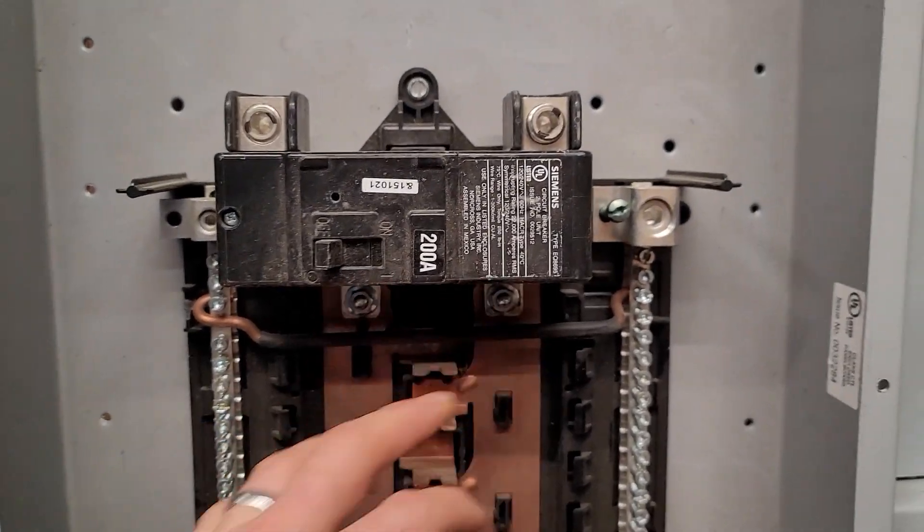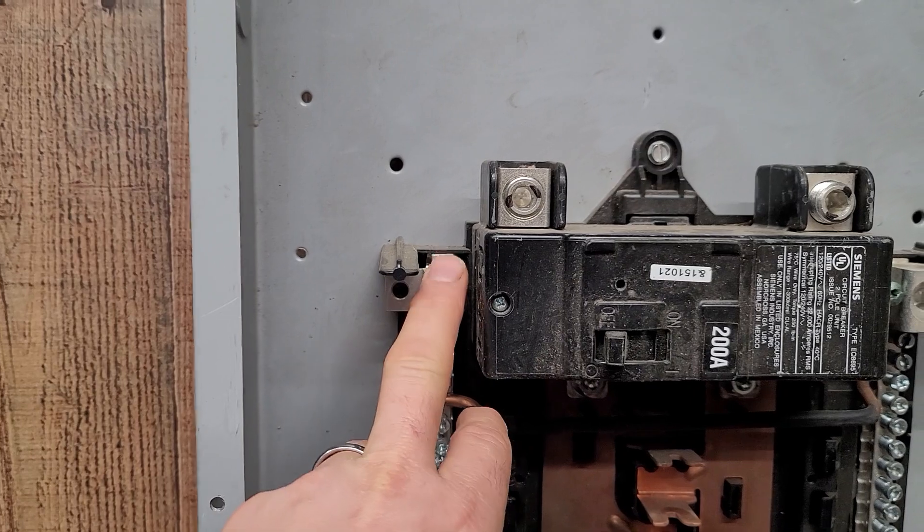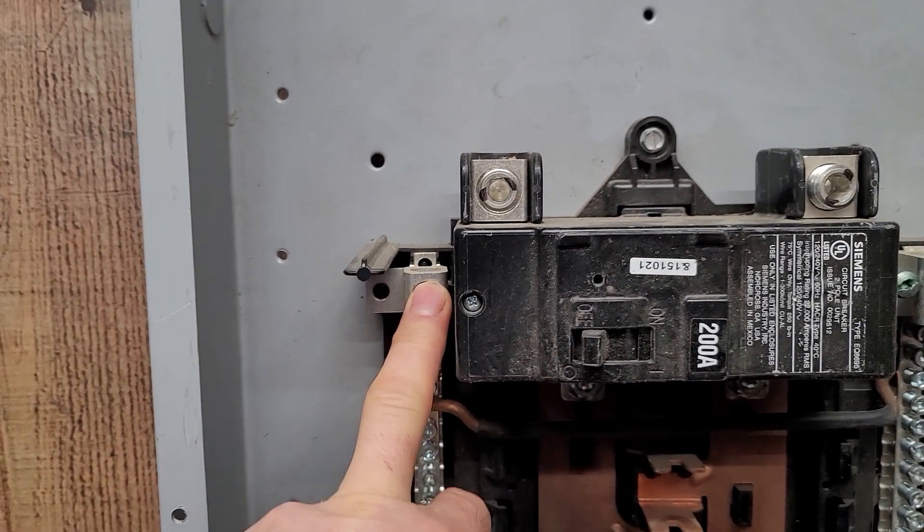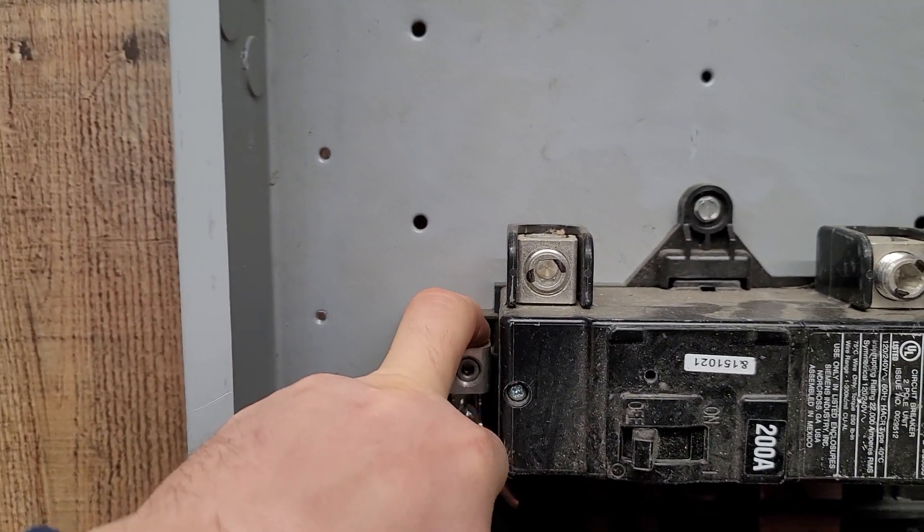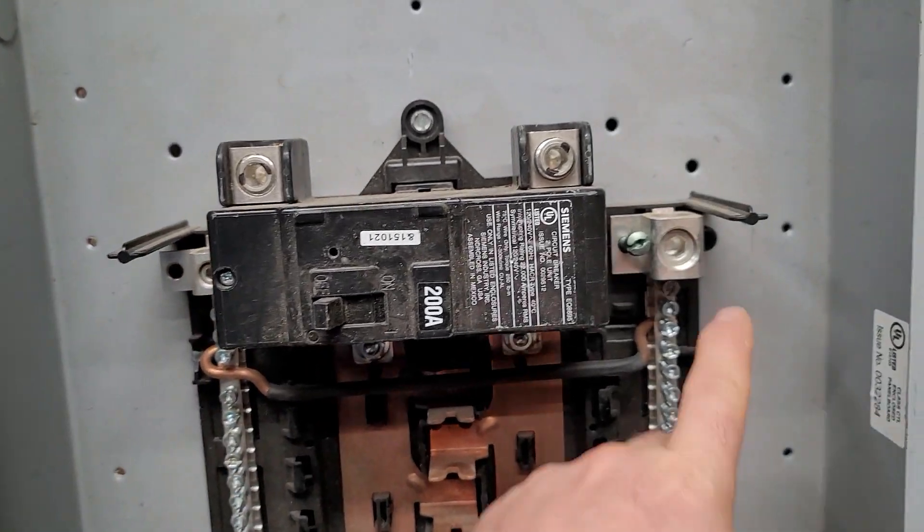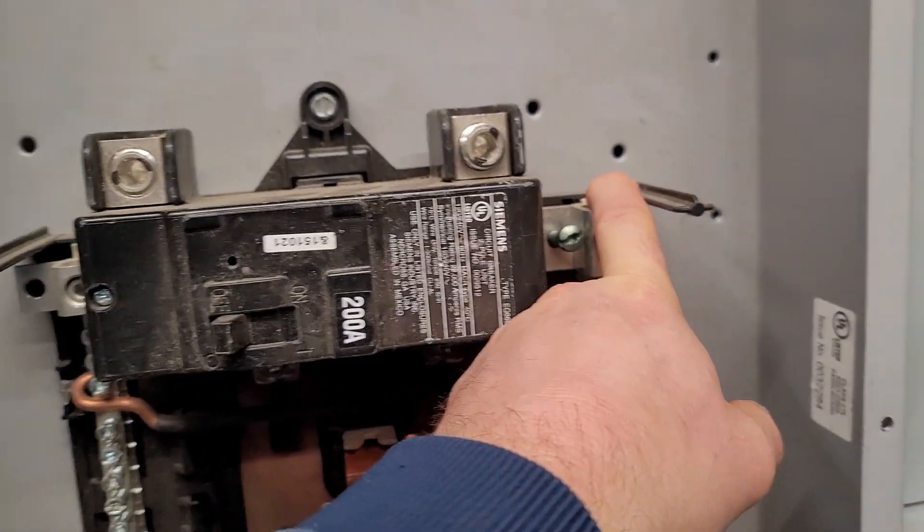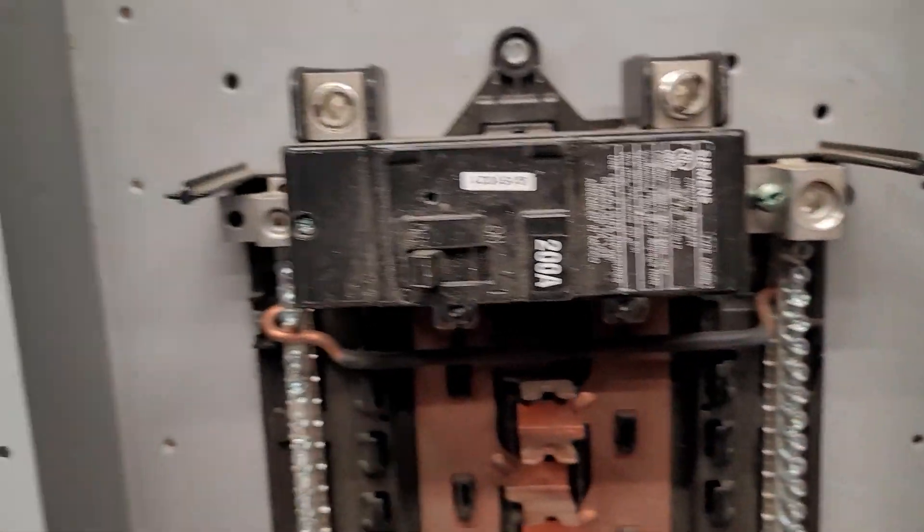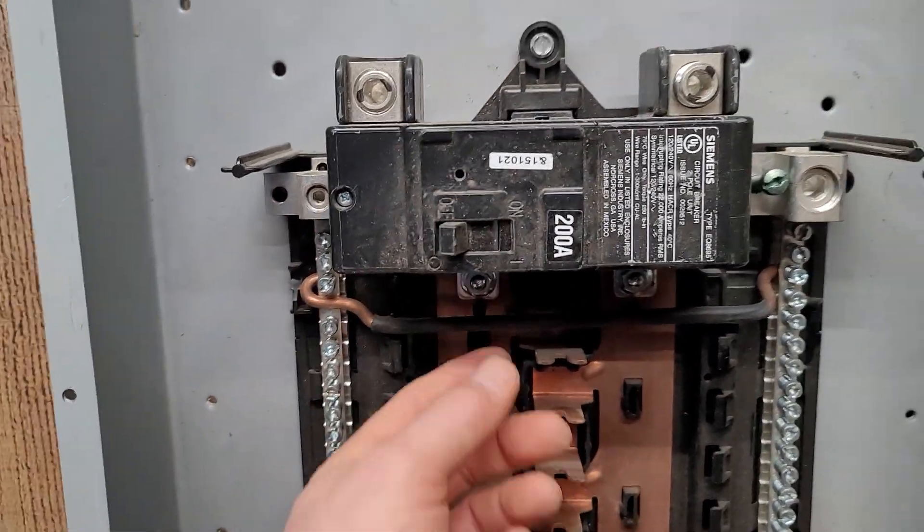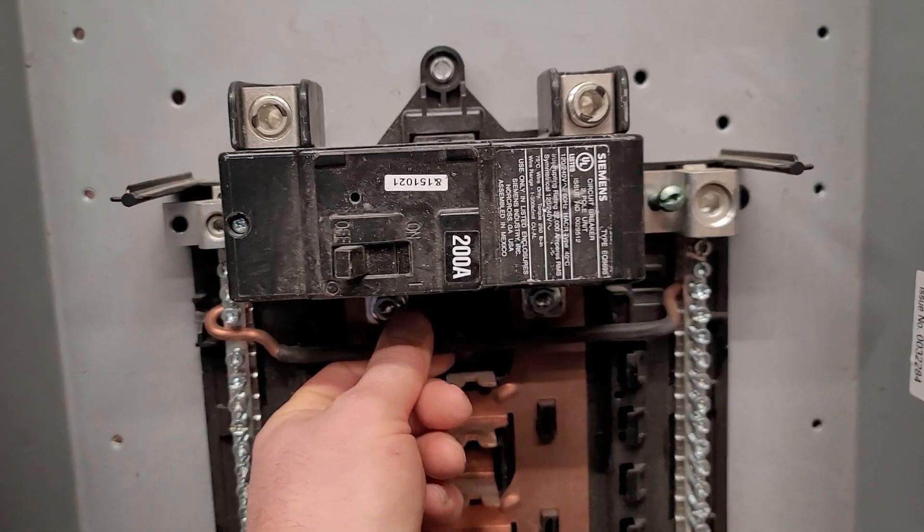Well here's the problem with that. You end up with a smaller terminal right here to land your neutral. It's not going to be big enough to land your neutral. You would have this larger one over here which would seat your ground fine, but you're going to end up with a smaller neutral terminal and likely this can is not listed to remove this right here.